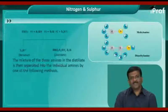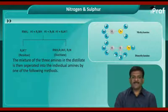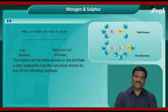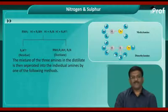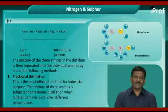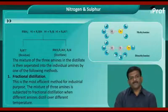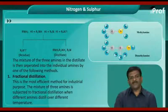The mixture of the three amines in the distillate is then separated into individual amines by one of the following methods. The first method is fractional distillation. This is the most efficient method for industrial purposes. The mixture of three amines is subjected to fractional distillation, when different amines distill over at different temperatures.